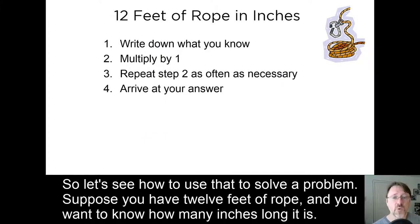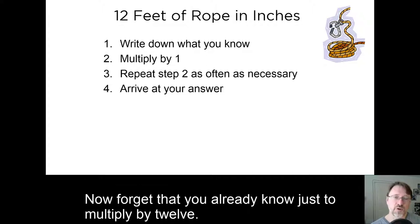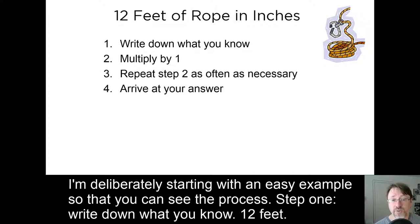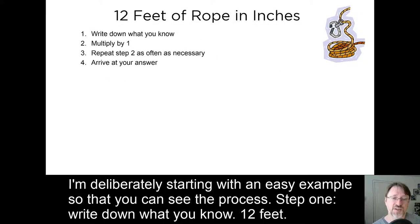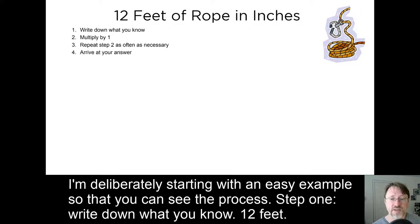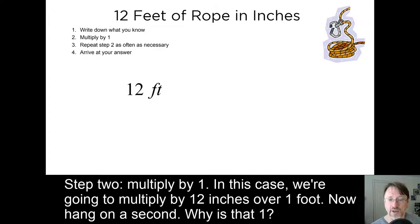So let's see how to use that to solve a problem. Suppose you have 12 feet of rope, and you want to know how many inches long it is. Now, forget that you already know just to multiply by twelve. I'm deliberately starting with an easy example so that you can see the process. Step one, write down what you know. Twelve feet. Step two, multiply by one. In this case, we're going to multiply by twelve inches over one foot. Now, hang on a second. Why is that one?